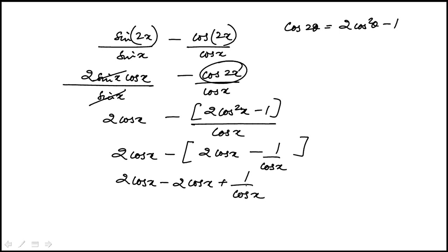When I distribute the minus, those first two terms drop out and I'm left with 1 over cosine x, which is indeed the answer choice A.